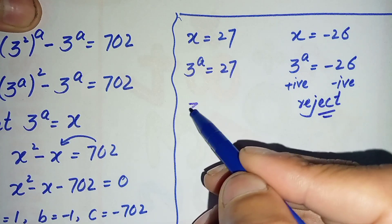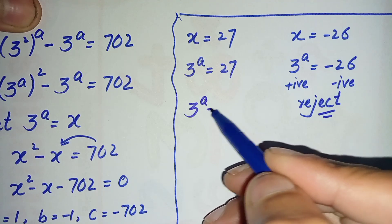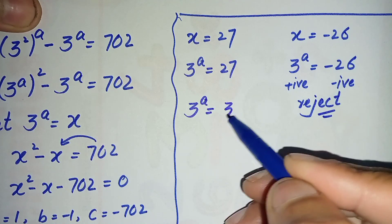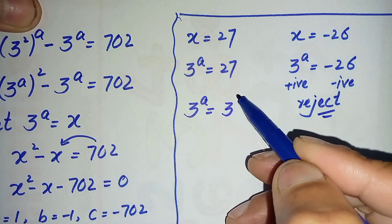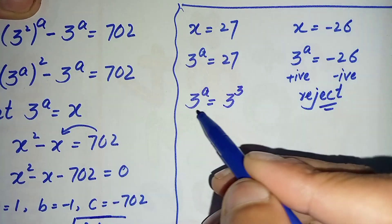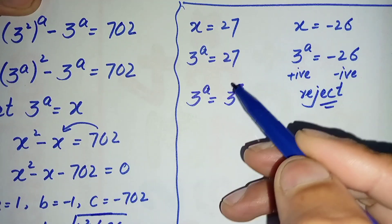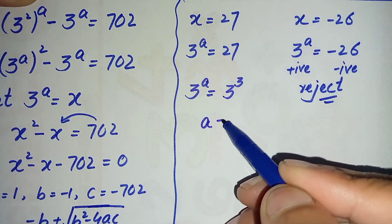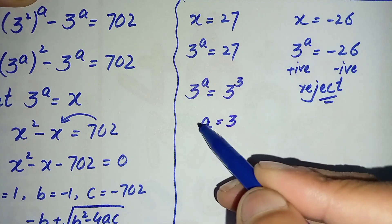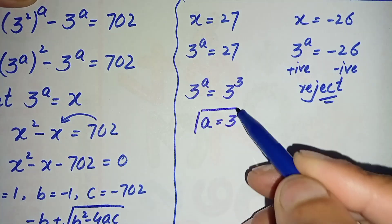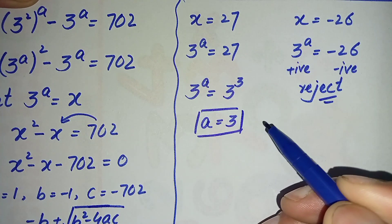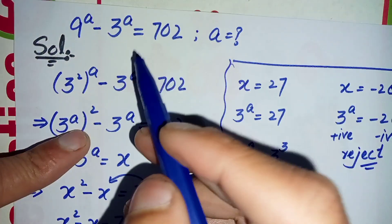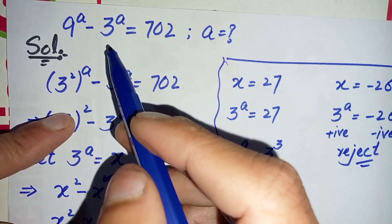We only solve the first equation: 3 raised to power a is equal to 27. We can also write 27 as 3 raised to power 3. Here the bases are the same, so we compare the powers: a is equal to 3. So a equals 3 is one possible solution and root of this exponential equation.